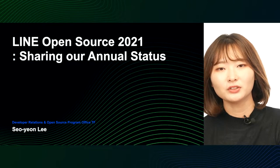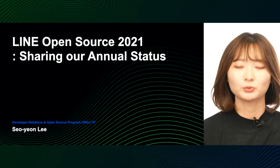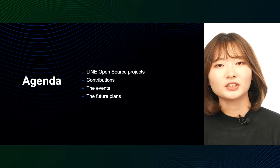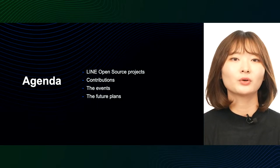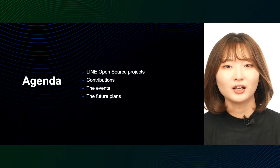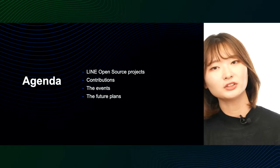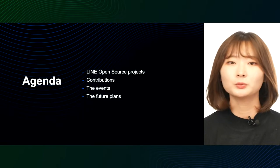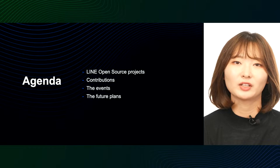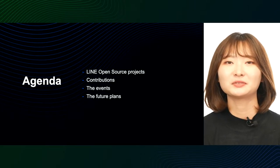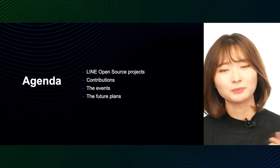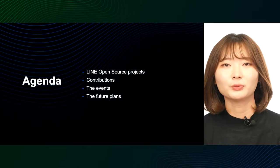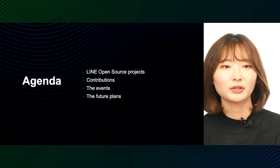First of all, let's look at the agenda about what we're going to cover today. Number one, let's see what kind of Open Sources have been released this year and how the released Open Sources are being operated. Second, whether line engineers are contributing to Open Sources and what kind of contributions have been made. In addition, there were multiple internal and external events related to Open Source. And finally, where is LINE's Open Source going in the future and why we need this kind of direction right now.